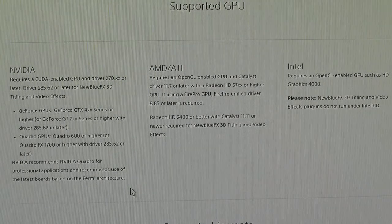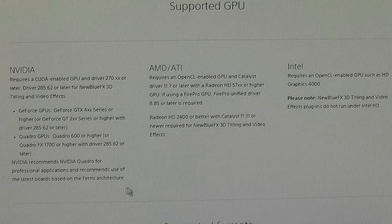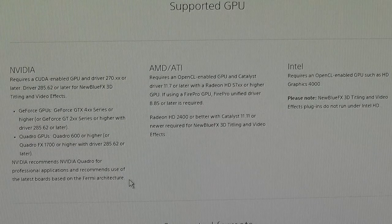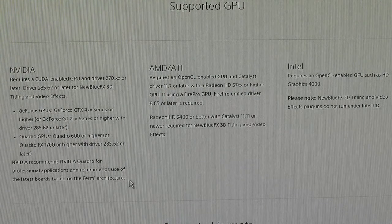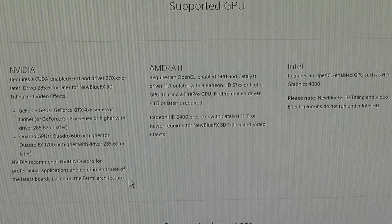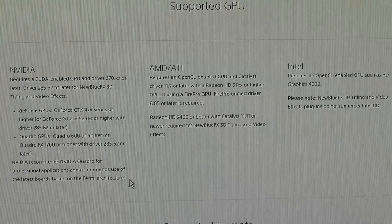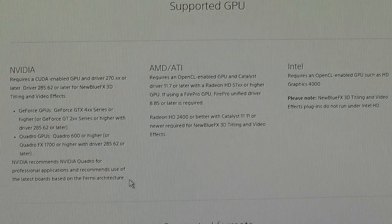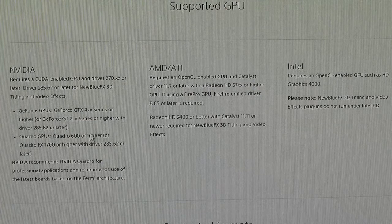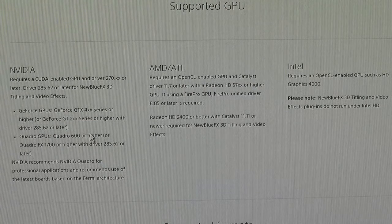I don't think that's particularly clear in saying that anything beyond Fermi is completely disabled in terms of GPU rendering. Also, I don't think many people are even aware of what architecture their video card is based on — whether it's Fermi, Kepler, Tesla, or Maxwell. People aren't that geeky to know this kind of thing, and I think there should be a proper list of cards that are and aren't supported when it comes to GPU rendering.